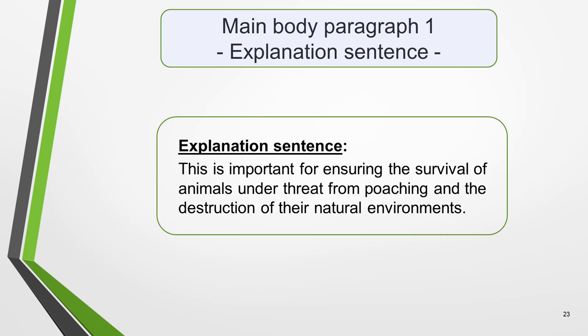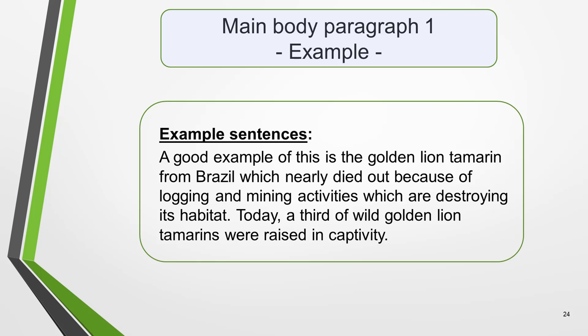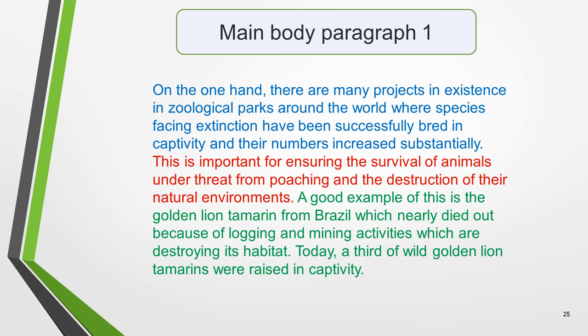Next, we write an explanation sentence that expands on the idea: 'This is important for ensuring the survival of animals under threat from poaching and the destruction of their natural environments.' Finally, we add an example to support the main point. If you can't think of a real example, it's fine to make one up as long as it's believable — the examiner isn't going to check your facts. Here's the example: 'A good example of this is the golden lion tamarin from Brazil, which nearly died out because of logging and mining activities destroying its habitat. Today, a third of wild golden lion tamarinds were raised in captivity.' That completes the three parts of the first main body paragraph.